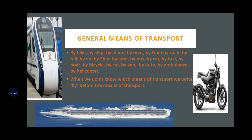Next, for general means of transport, we make use of the preposition by: by bike, by ship, by plane, by boat, by train, by road, by rail, by air, by land, by bus, by car, by taxi, by bicycle, by auto, by ambulance, by helicopter. These are the different means of transport. Before these means of transport you can say by — for example, I go to school by bike, I go to school by bus.